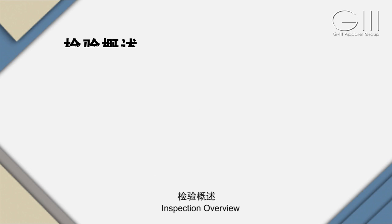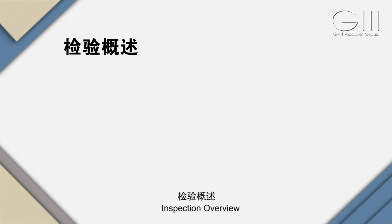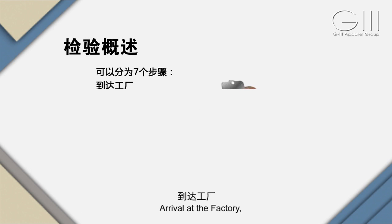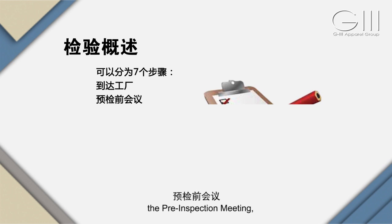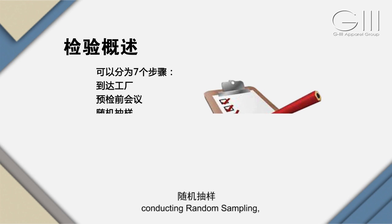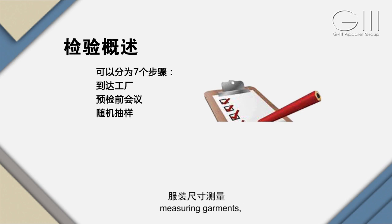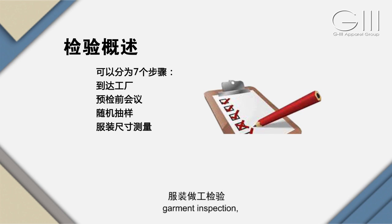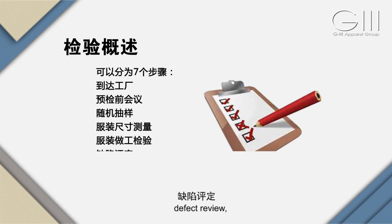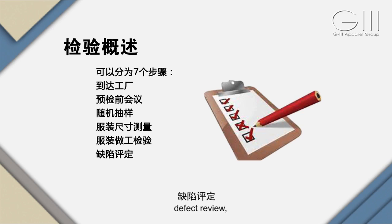第二节，如何进行AQL最终抽样检验。检验概述，可以分为七个步骤：一、到达工厂；二、预检前会议；三、随机抽样；四、服装尺寸测量；五、服装做工检验；六、缺陷评定；七、验检报告。